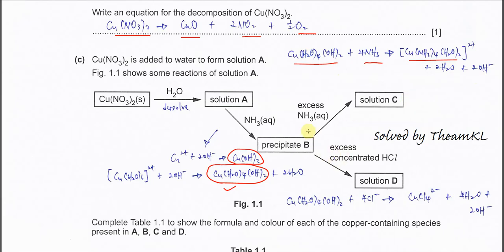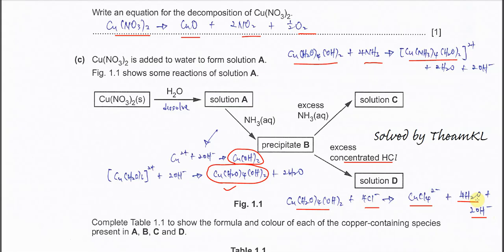If instead of ammonia we add excess concentrated HCl, then another complex forms. The chloride will form a complex with the copper ion, giving CuCl4²⁻ — the tetrahedral complex, which is yellow. You need to give the equation when asked. Starting from precipitate B with the correct formula, you form this solution, where 4H2O and 2OH are substituted. These are the equations you should give when asked.